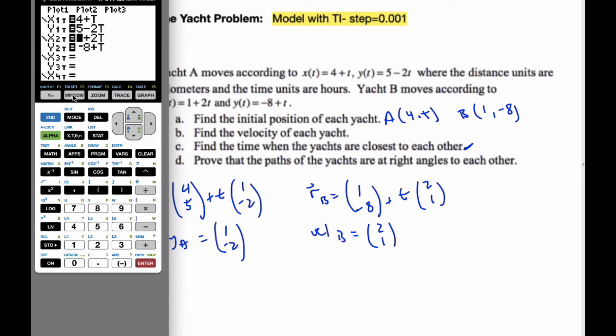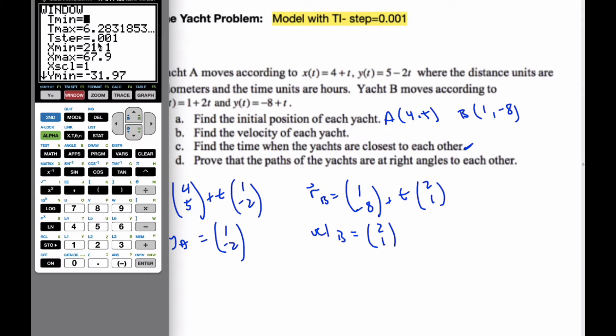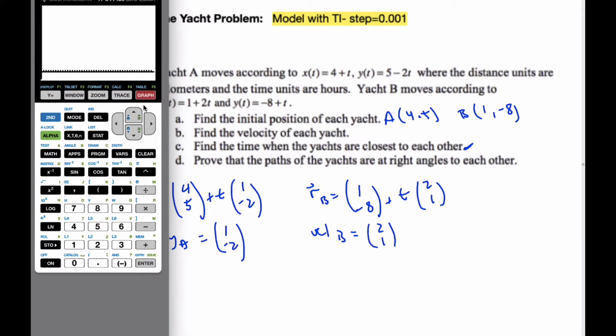And so I'm going to look at my window, and my T minimum is 0, my maximum is 6. I'm going to go by 0.001, and I've done this on purpose so that we can watch the boats go. Actually, I'll change it back. We'll make it like 0.5 at first, and we'll come back to it. So then I'm going to graph it. Let me zoom to standard. And we can see that here's the one path, here's the other path of what the yachts are doing.